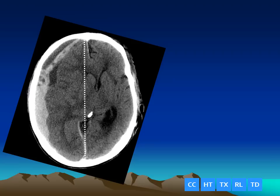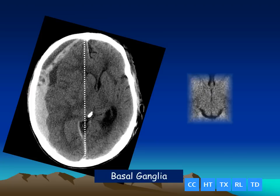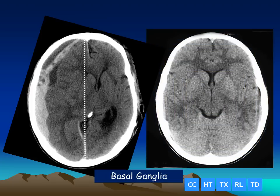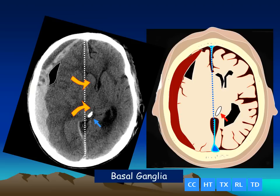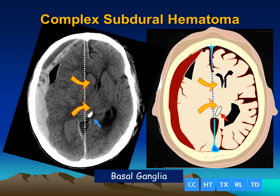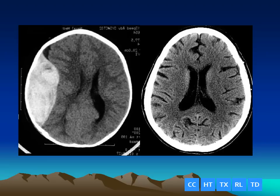Here is another patient that presents with an obvious mass lesion, subfalcial herniation and shift. In comparison to the normal patient at the level of the basal ganglia, we can see that there is displacement of the pineal gland. We can see that there is an extraaxial collection that is outside the subarachnoid space causing subfalcial herniation and shift. This is a patient who had a complex subdural hematoma. Notice that on the abnormal side underlying the extraaxial blood clot, we have compressed the cerebrospinal fluid out of the sulci.